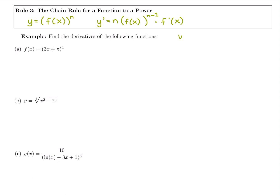We could have tried to use this with a regular x — if you had x to the tenth, you could say bring down the ten, keep that x, raise it to the nine, then multiply by the derivative of the inside. The derivative of x is just one, so we don't bother when it's just x to a power because it takes an extra step we don't need.